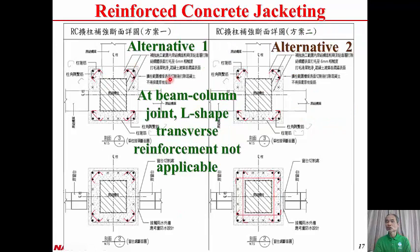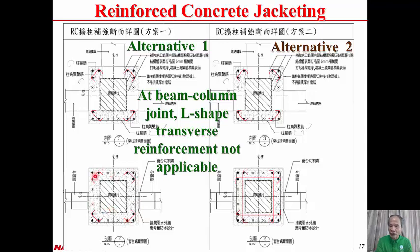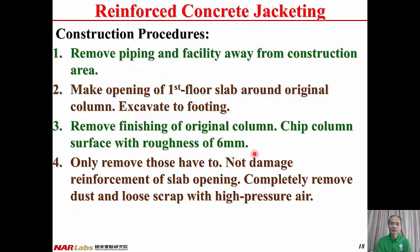Here are some reference drawings for the engineer. At the beam-column joint, alternative one uses a corner tie, and alternative two also uses a corner tie at the joint but uses an interior tie with a 135-degree hook at one end and a 90-degree hook at the other for the column cross-section. Here are the construction procedures for Reinforced Concrete Jacketing.